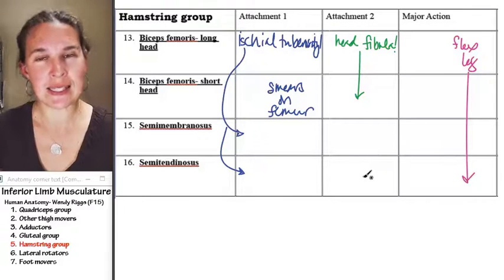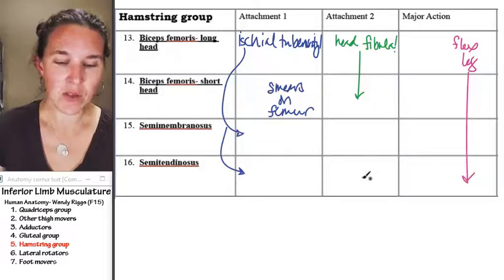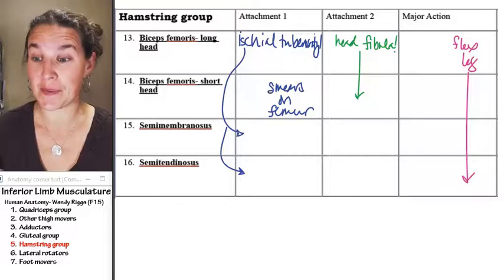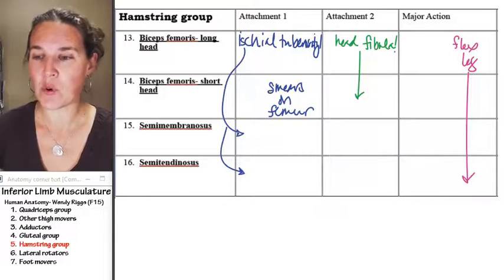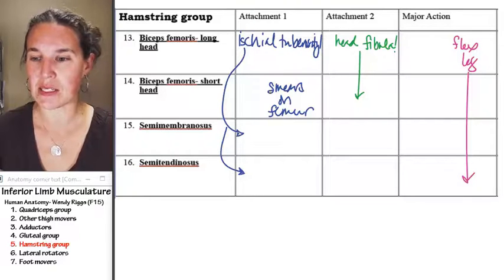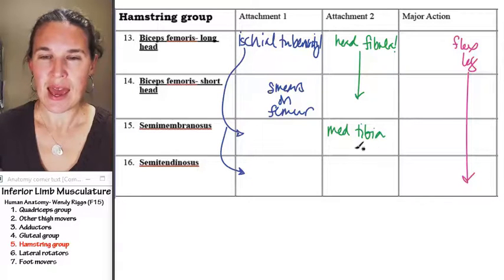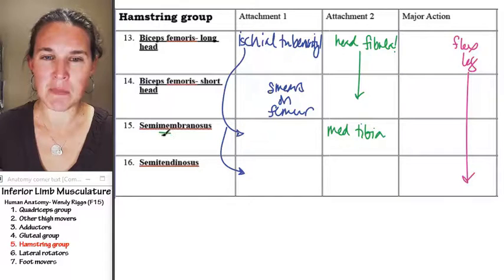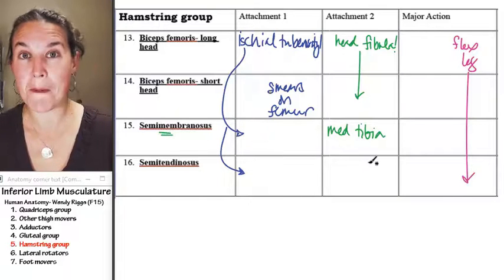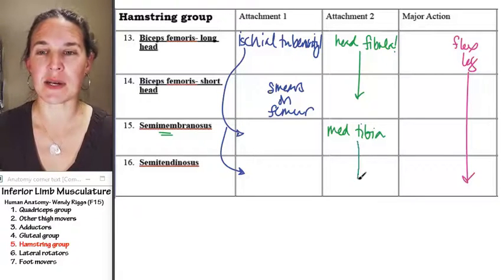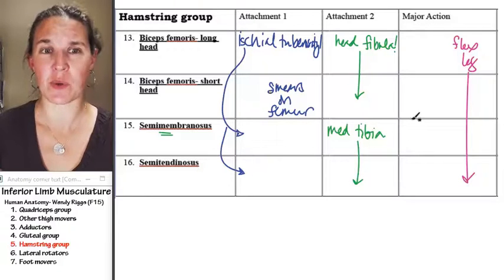Semimembranosus and semitendinosus, those guys attach to the tibia, and they both attach medially to the tibia. Medial tibia. And in fact, semimembranosus is slightly more medial than semitendinosus, but there are other ways that we can tell.